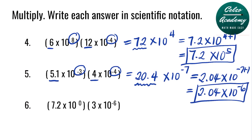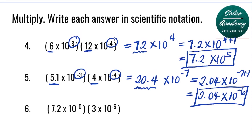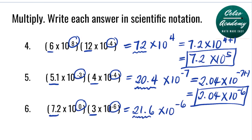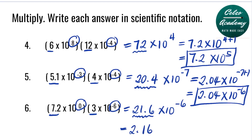Question six: 7.2 times 10 to the 0 power, multiplied by 3 times 10 to the power of negative 6. Multiply 7.2 and 3 to get 21.6. Add the powers 0 and negative 6 to get 10 to the power of negative 6. Simplifying, rewrite 21.6 as 2.16, and add 1 to the power. The final answer is 2.16 times 10 to the power of negative 5.